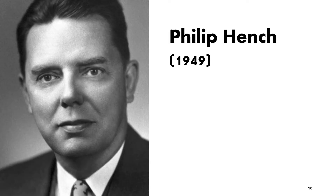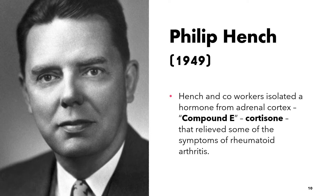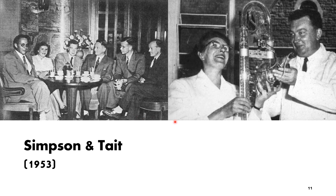We also have Philip Hench. In the year 1949, Hench and co-workers isolated a hormone from the adrenal cortex that was termed compound E, later known as cortisone, which relieved some of the symptoms of rheumatoid arthritis. For their discoveries relating to the hormones of the adrenal cortex, their structure and biological effects, Hench and his co-workers earned the Nobel Prize in Physiology or Medicine in the year 1950.